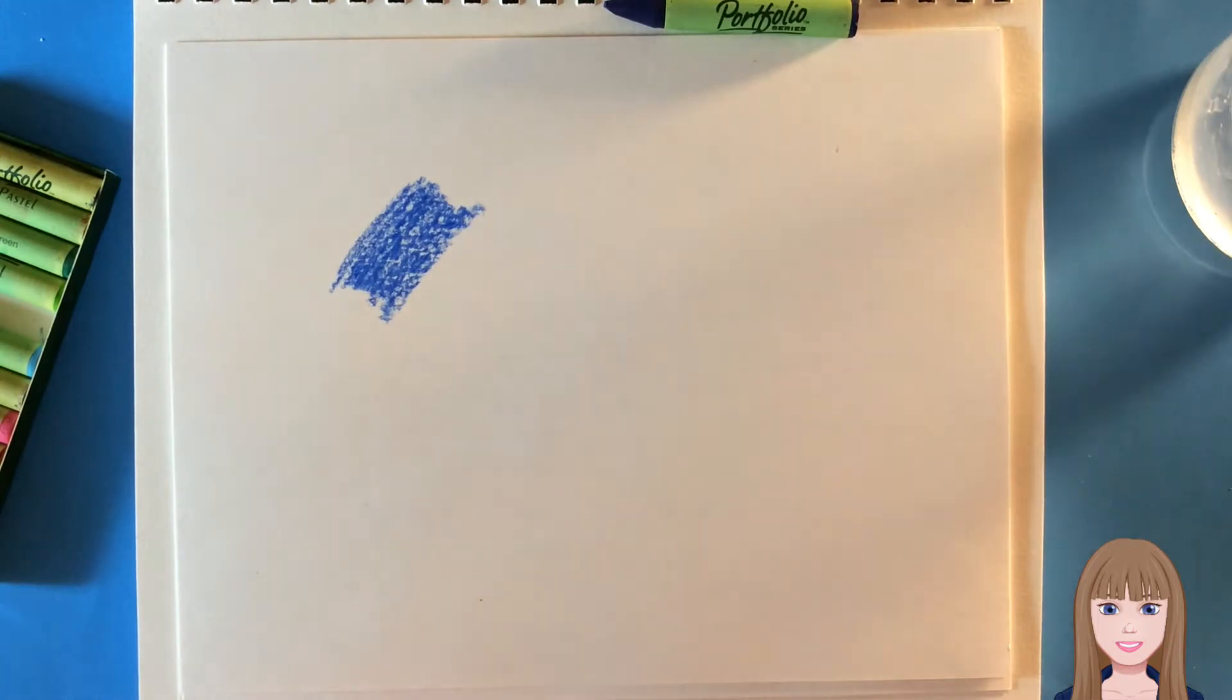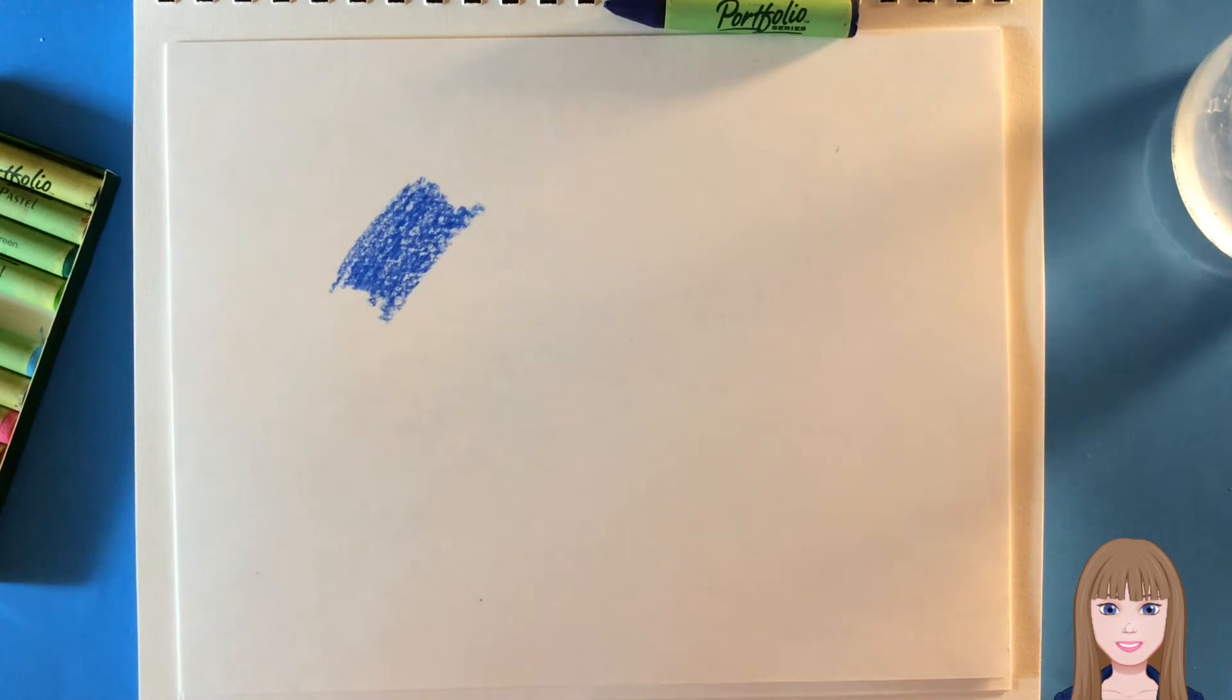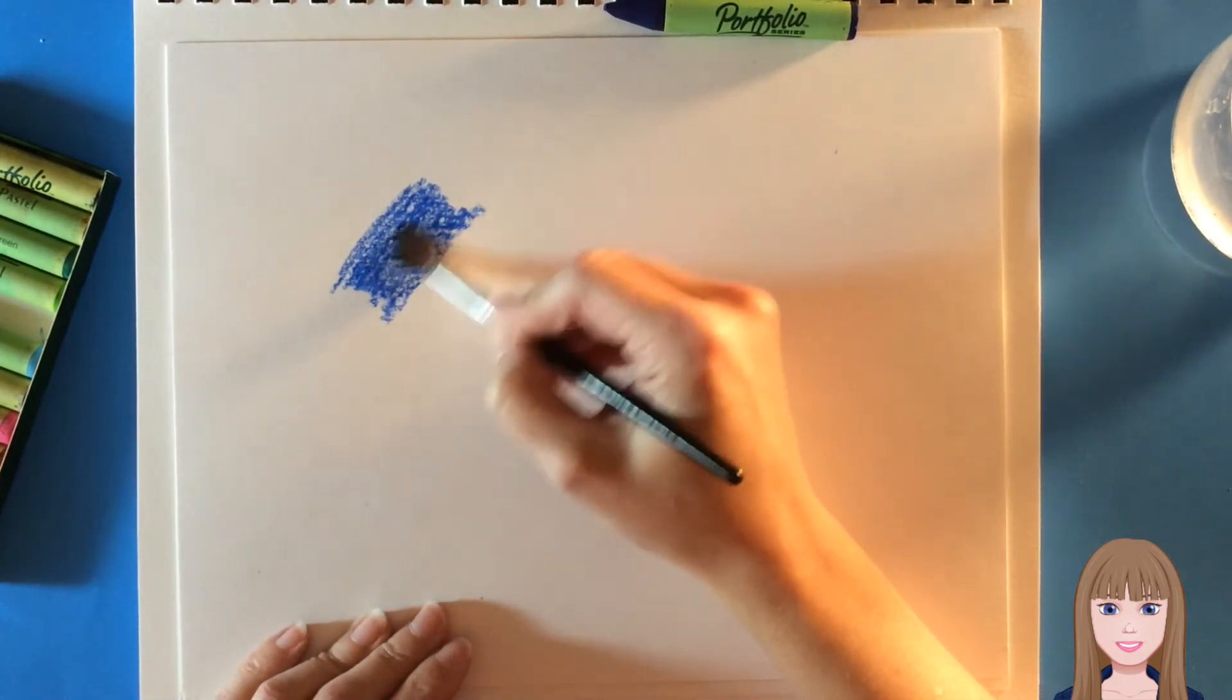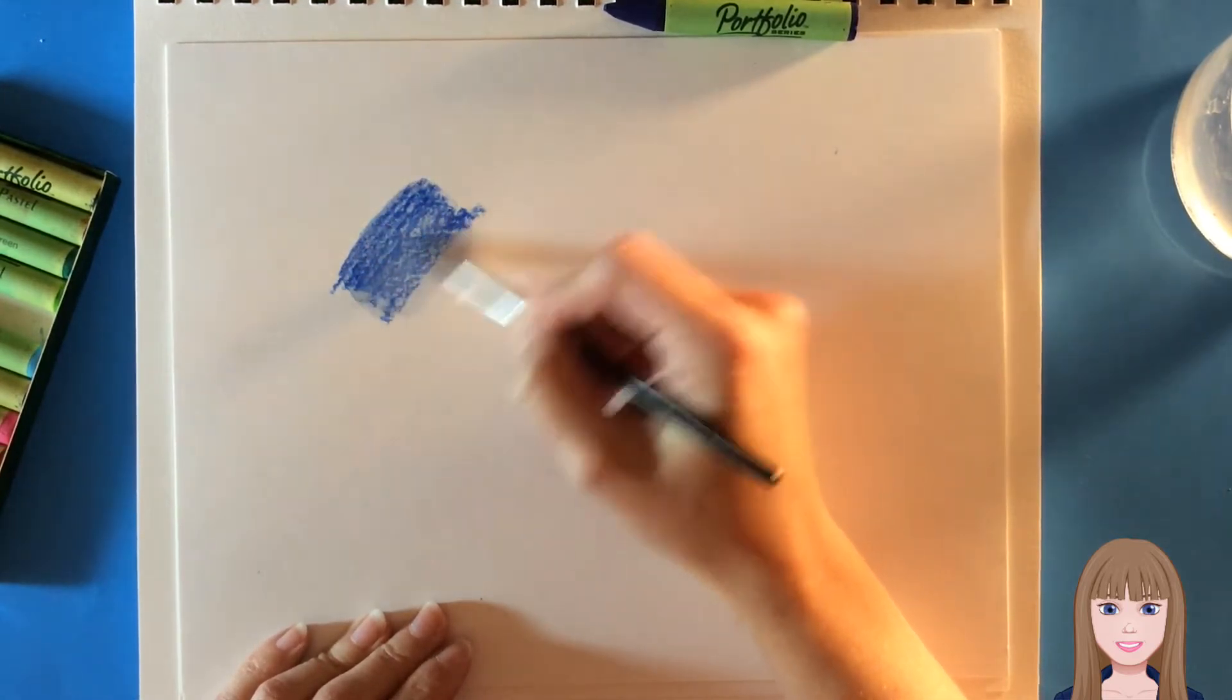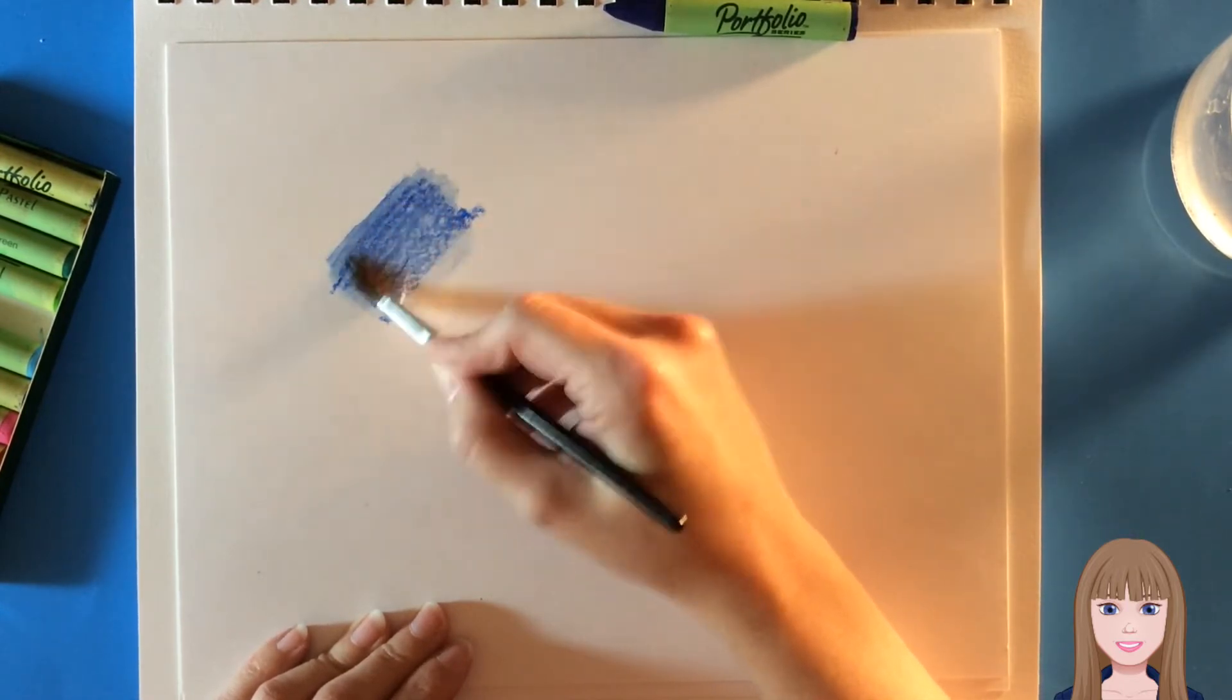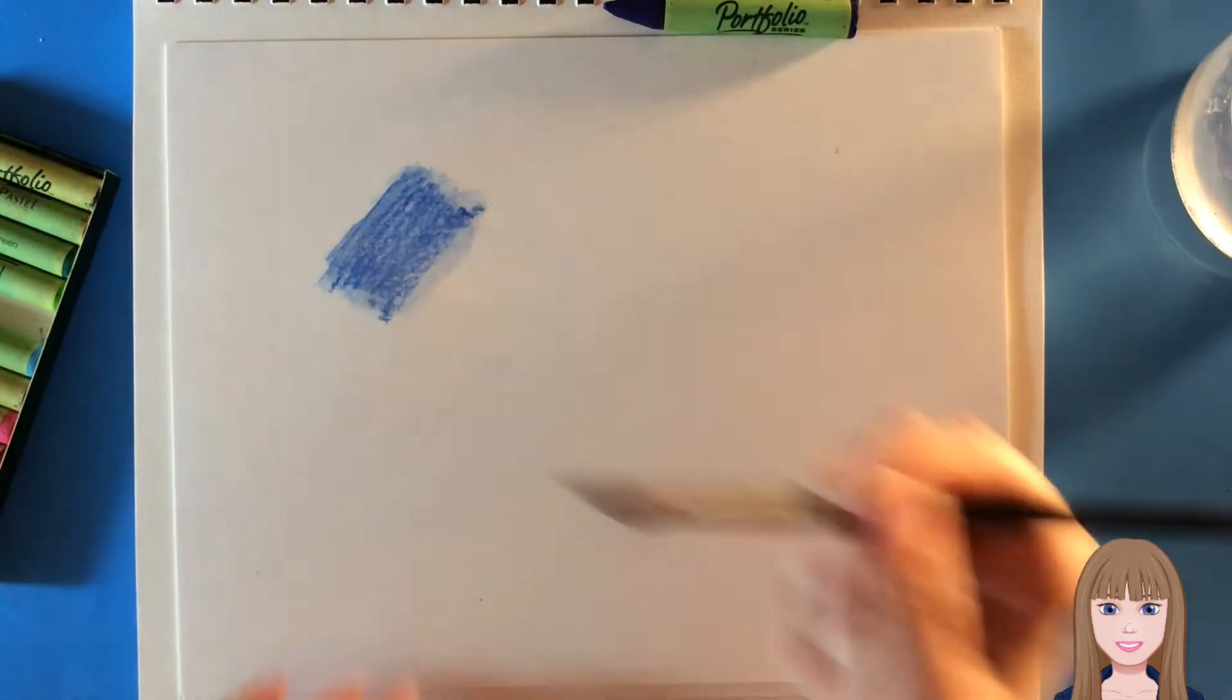But if we take a brush dipped in water and paint over that, the oil pastel blends out more like paint.